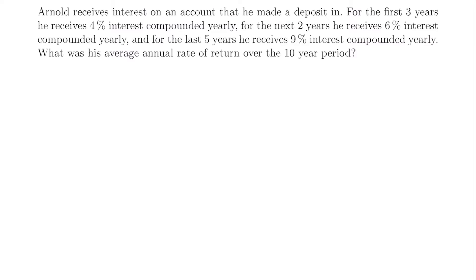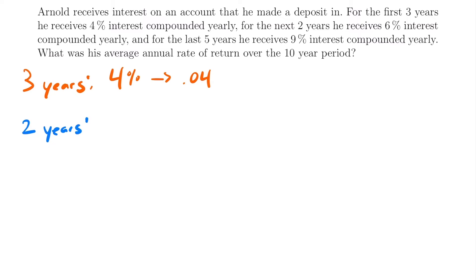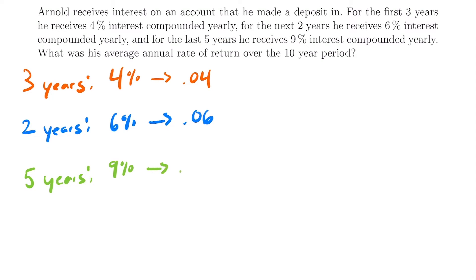For the first three years, Arnold received an interest rate of 4% compounded yearly, which in decimal form is 0.04. For the next two years, he received 6% interest compounded yearly, which in decimal form is 0.06. And for the last five years, he received 9% interest compounded yearly, which in decimal format is 0.09.